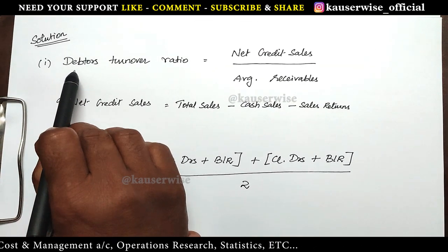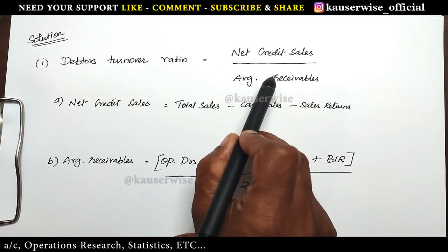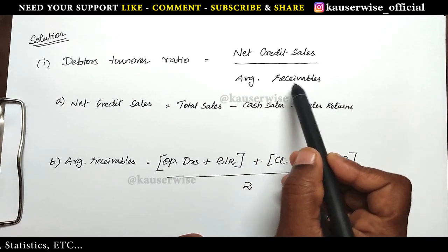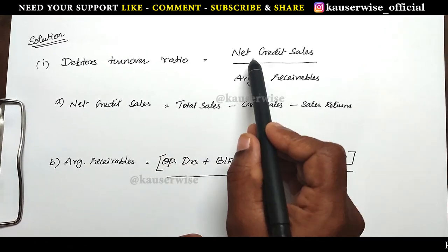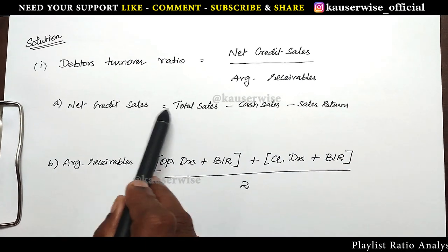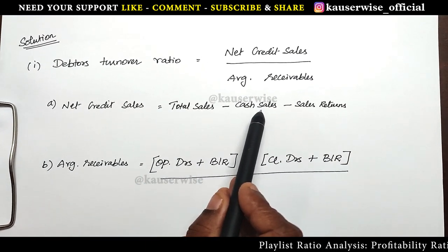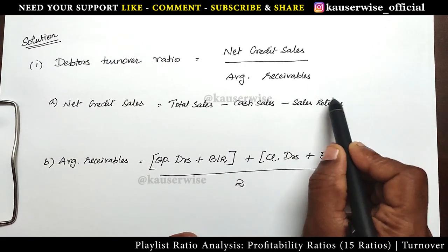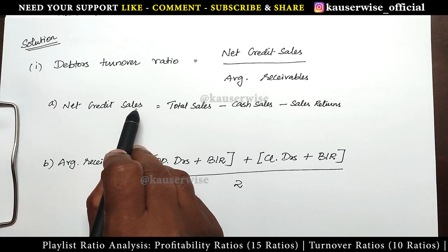First we are going to find out the debtors turnover ratio. The formula is: net credit sales divided by average accounts receivable. There is also a formula to find out net credit sales: total sales minus cash sales, minus sales returns — that will give you net credit sales.